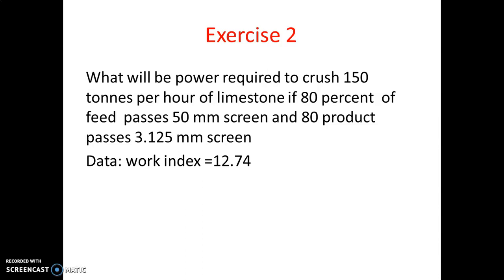The next exercise is based on Bond's law. It states: what will be the power required to crush 150 tons per hour of limestone, if 80% of the feed passes a 50 mm screen and 80% of the product passes through a 3.125 mm screen? These screens are used to find the diameter of the solid materials, which we will discuss in detail in unit two. The work index required for Bond's law is 12.74, and it has no units.